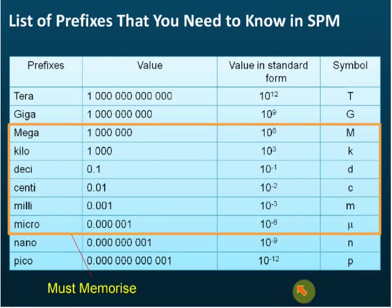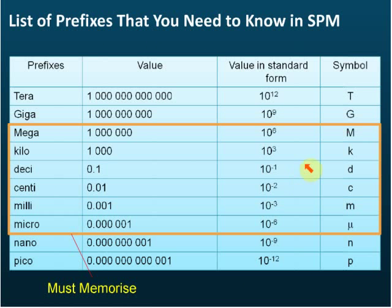The prefixes you need to know in SVM are: tera, giga, mega, kilo, desi, centi, milli, micro, nano, and pico. However, if you really can't memorize all of them, then focus on these six: mega, kilo, desi, centi, milli, and micro.